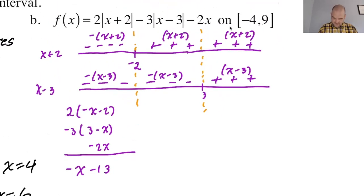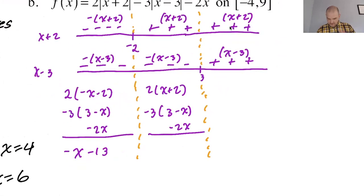So then the next one, it's going to be 2 times x plus 2, which is 2x plus 4. Then it's negative 3 times 3 minus x. And then I'm just going to subtract another 2x. So that's 2x plus 3x is 5x. And then minus 2x is back to 3x. 4 minus 9 is negative 5. So just 3x minus 5.